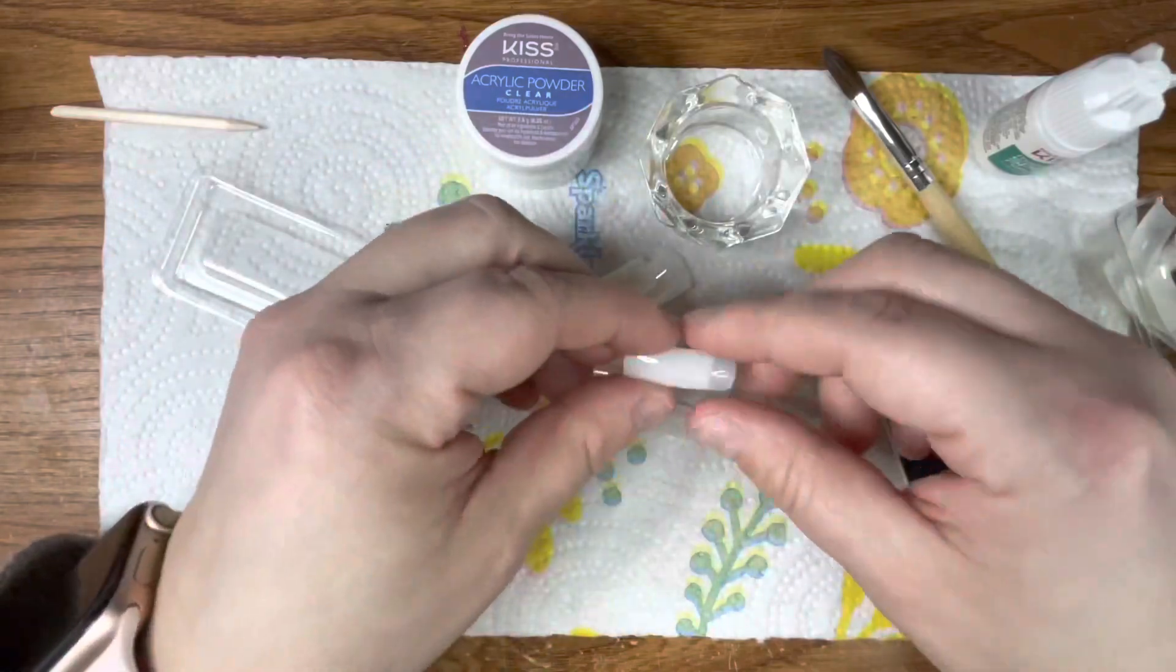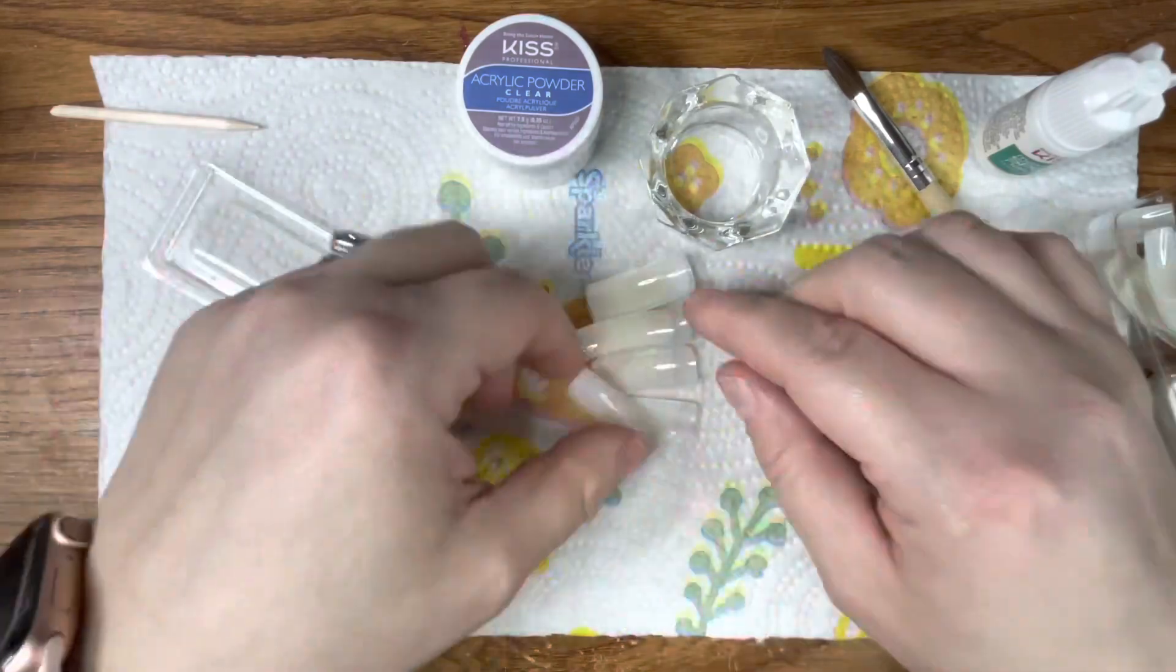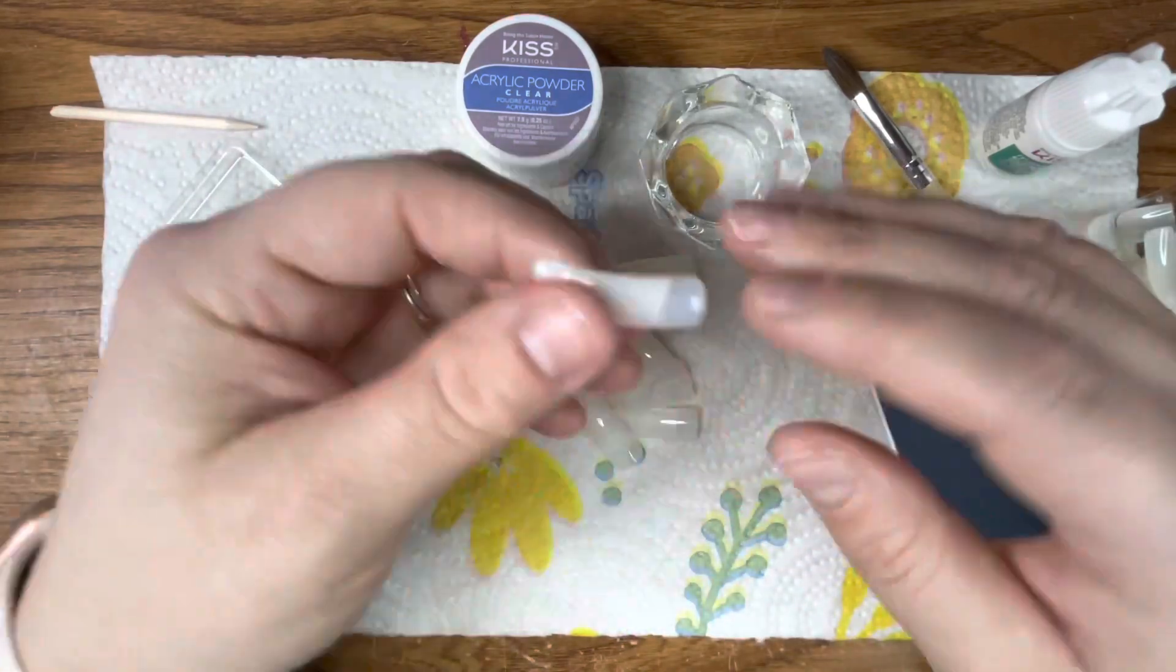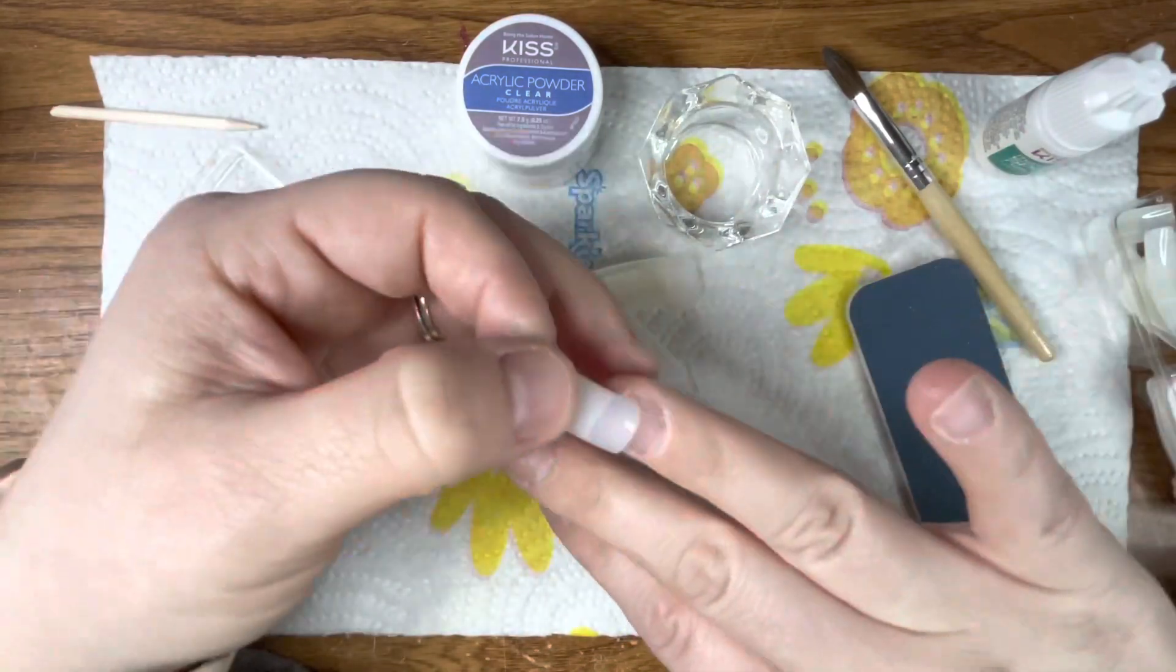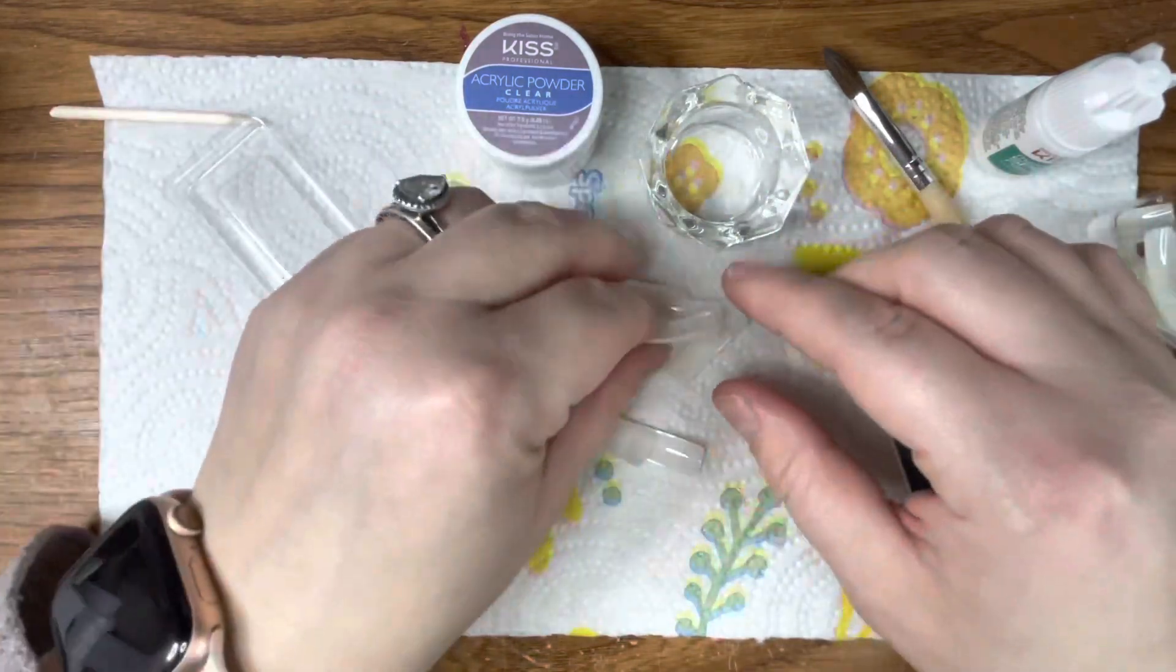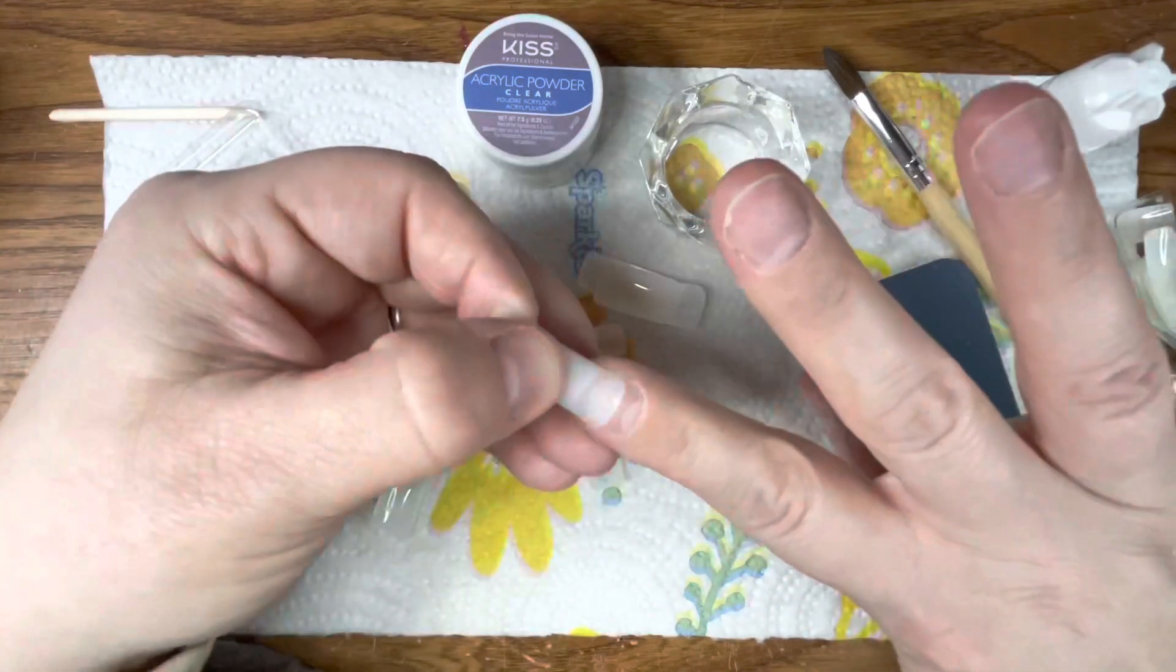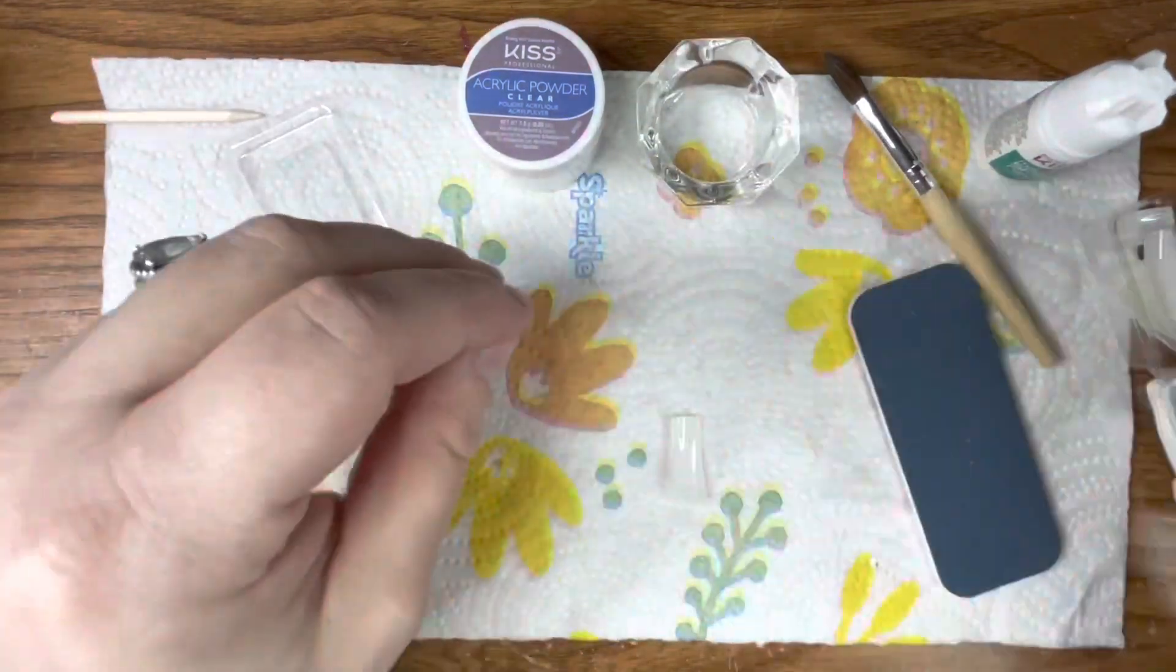The larger kits come with that if you wanted to get the larger kit. But I'm just going to put on a regular gel top coat so that I can take them off when I'm done filming.